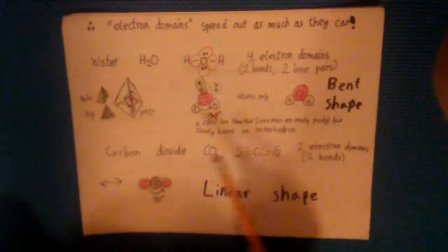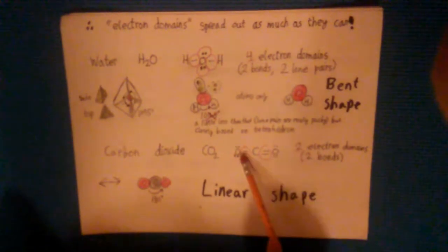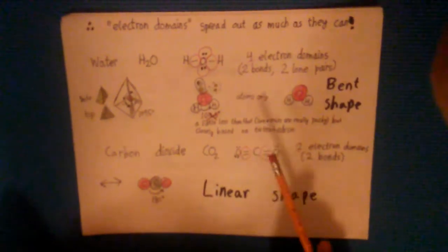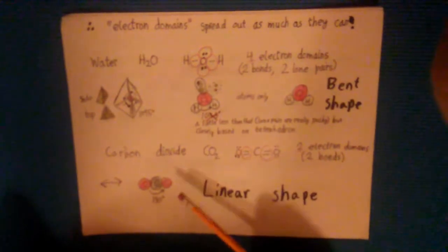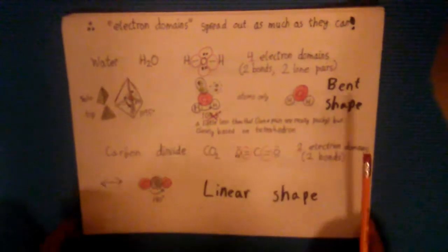For carbon dioxide though you only have two electron domains, you only have the two bonds, so the farthest they can spread out is to be on opposite sides of the atom and then you get a linear shape.